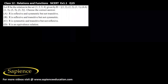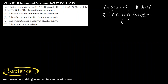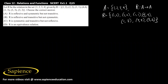Let R be the relation in the set A = {1, 2, 3, 4}. R is a relation on the set A, which means R maps A to A. The relation R is given as: (1,2), (2,2), (1,1), (4,4), (1,3), (3,3), and (3,2). We have to determine the correct properties of R.